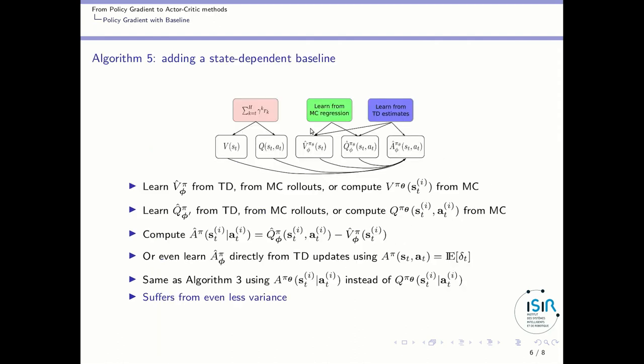So, if we want to add the state-dependent baseline, as you will see, there are several ways to do so. We can learn the value function using Monte Carlo method or using a temporal difference method. We can also compute this value function directly from trajectories without taking an estimate. We can do the same for the action value function, here and here.